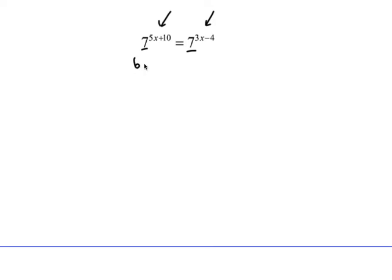If the bases are the same, which they are in this question, then the exponents are equal to each other. So we're going to have 5x plus 10 is equal to 3x minus 4. So when we get to solve that.